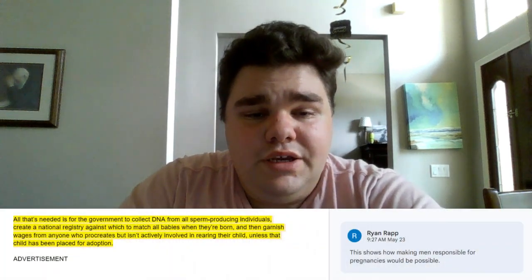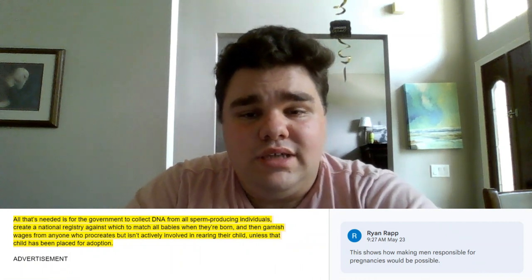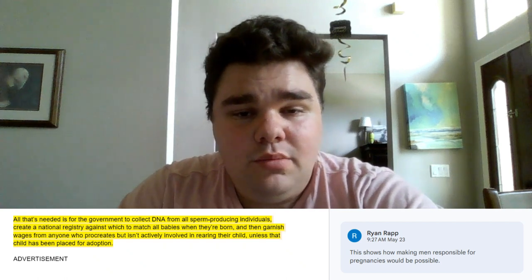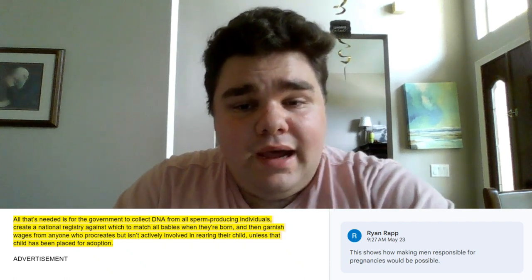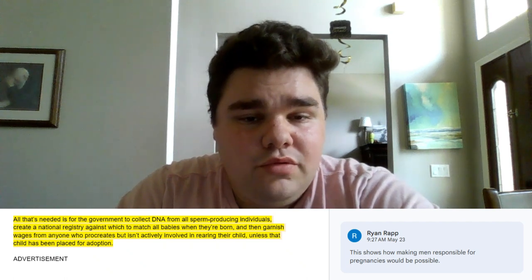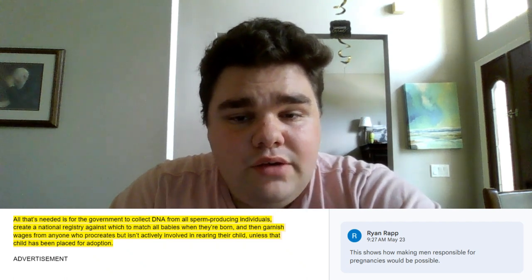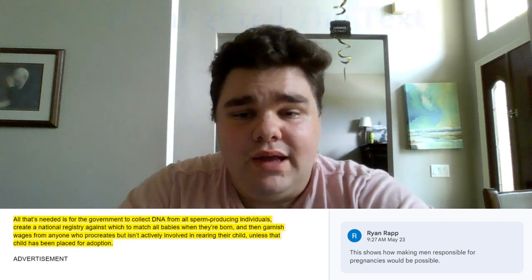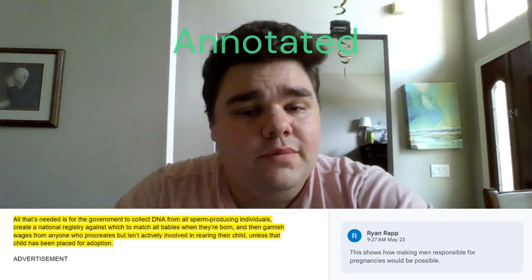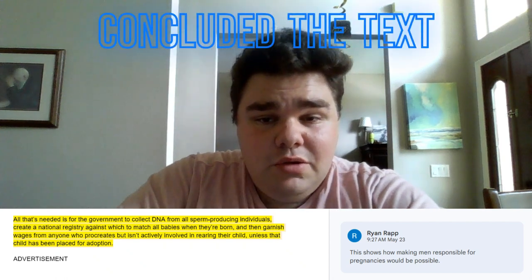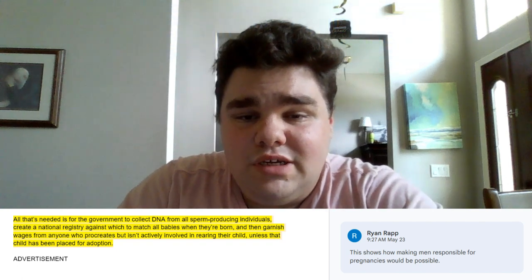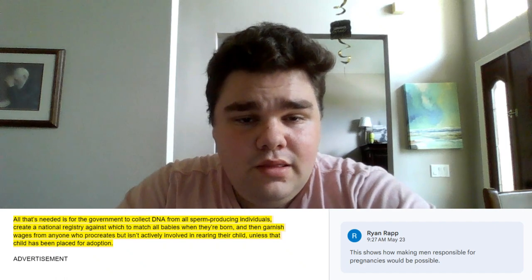Here's a great example of myself using these strategies in action. As you can see, the paragraph is talking about how men who aren't actively taking care of their children can have their wages garnished by collecting DNA samples from individuals who can produce sperm and creating a national registry. I commented on this with how making men responsible for pregnancies would be possible. I only used one sentence, but I've used multiple pre-reading and reading strategies: I highlighted the text — physically engaging with it — I annotated by not just highlighting but making a comment, and I concluded the text to just a sentence, which is a summary of the paragraph.